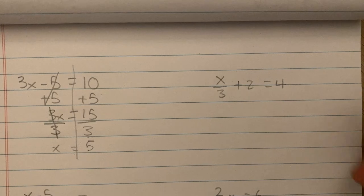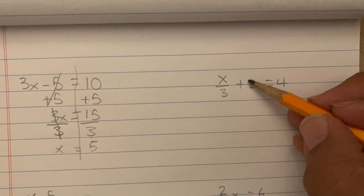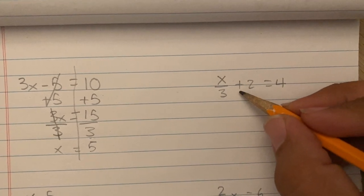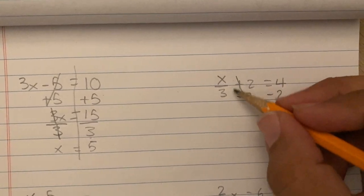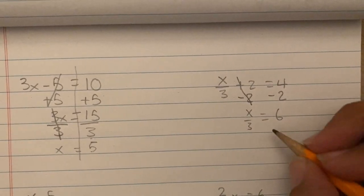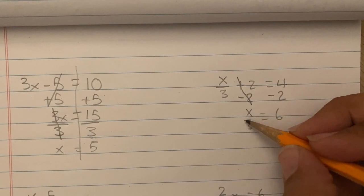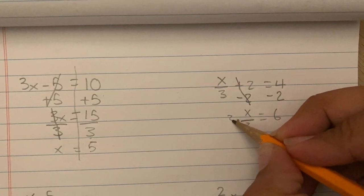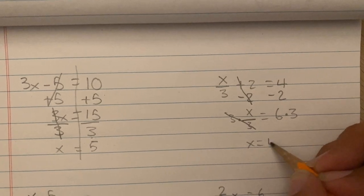Now we're going to work on this one. Again, we're getting rid of adding and subtracting first, then we're going to get rid of the division by 3. The opposite of plus 2 is minus 2 — that is gone. Minus 2 on both sides leaves us with x over 3 equals 6. Now we have to get rid of the 3. x is being divided by 3, so the opposite of dividing by 3 is multiply by 3 — this cancels away. Multiply by 3, and x equals 18.